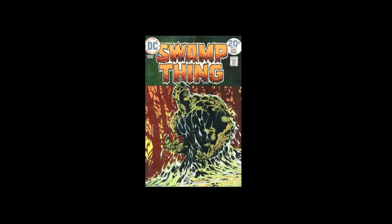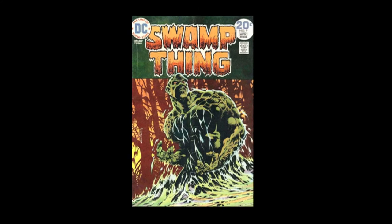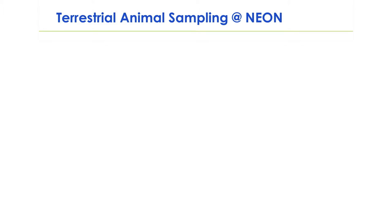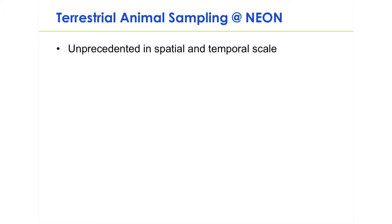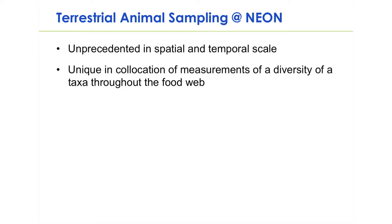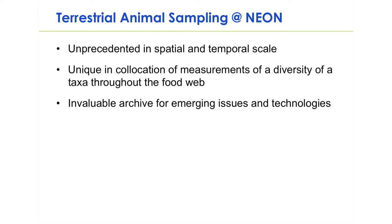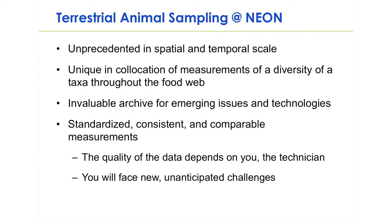At the end of a field day you will often feel like the swamp thing. But hopefully you will find it worthwhile because you will have contributed to this amazing dataset. The NEON Animal Ecology dataset is unprecedented in spatial and temporal scale, in the co-location of measurements of such a diversity of taxa, as well as the production of an invaluable archive to address emerging ecological issues and apply new technologies. This all depends on measurements being standardized, consistent, and comparable — a large part of which depends on you, the technician, to provide quality data.